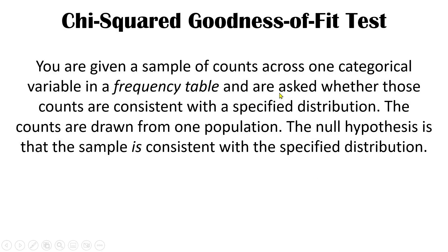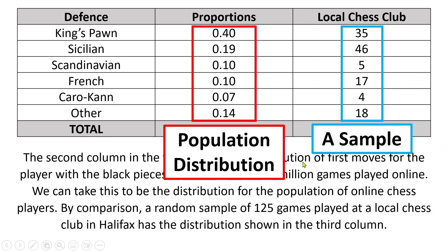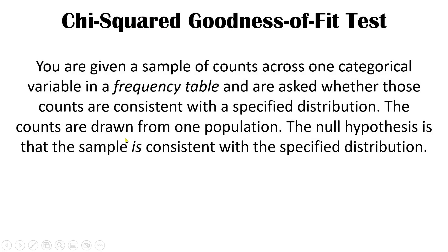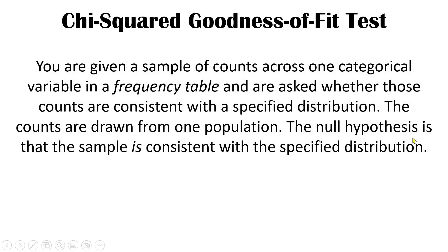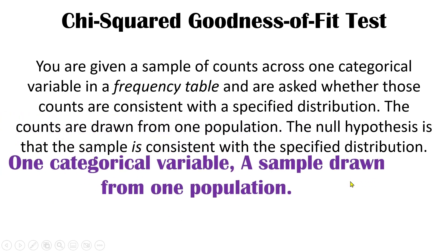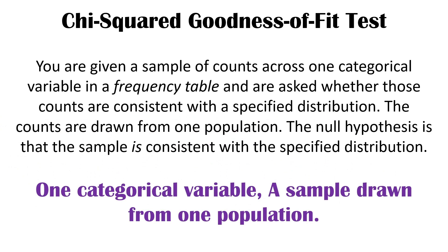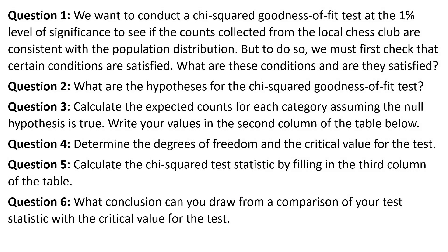We're going to ask whether those counts are consistent with a specified distribution — in this case, these proportions. The counts are drawn from a single population; in this case, it's the population of games played at a local chess club. The null hypothesis is that the sample is consistent with the specified distribution. In summary, for a goodness-of-fit test there's one categorical variable — the defense played — and the sample is drawn from one population.